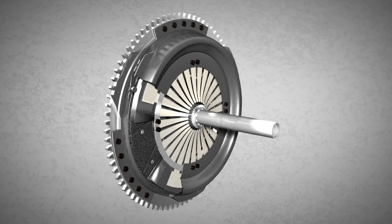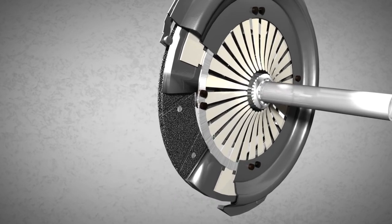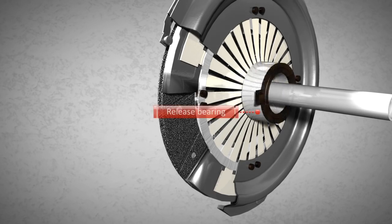Let's take a closer look in order to see what happens in this important component. A clutch release bearing is positioned in front of a diaphragm spring.